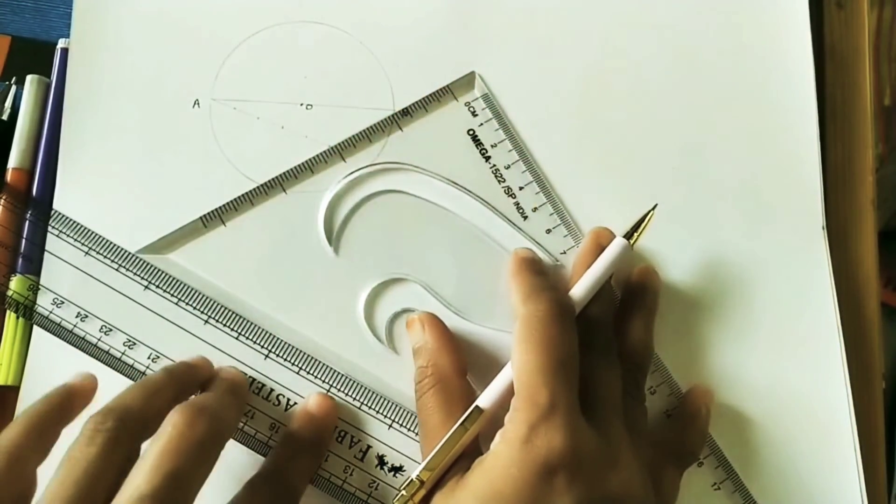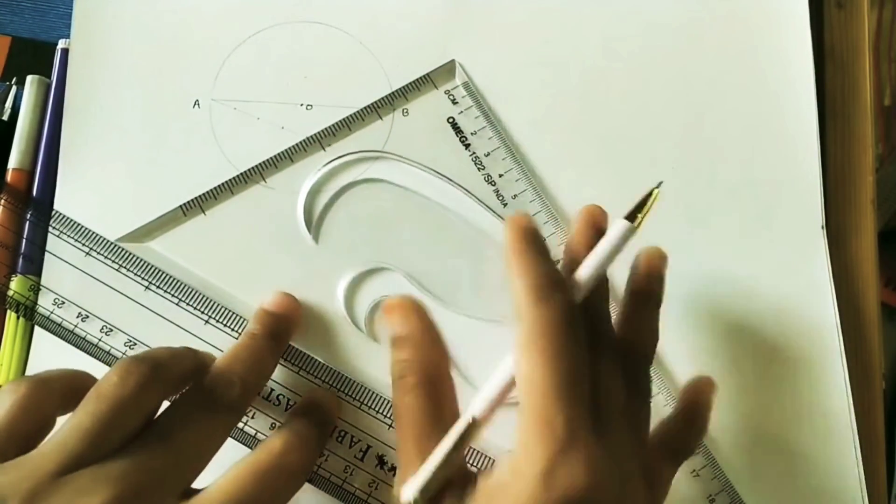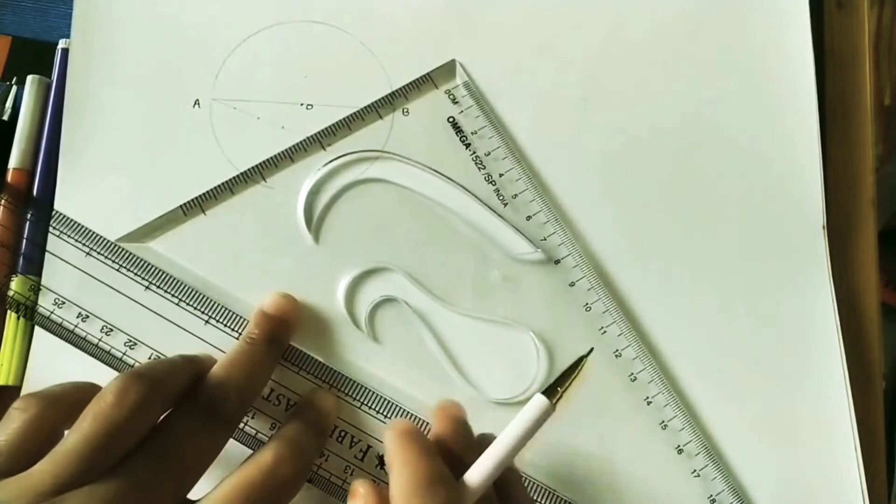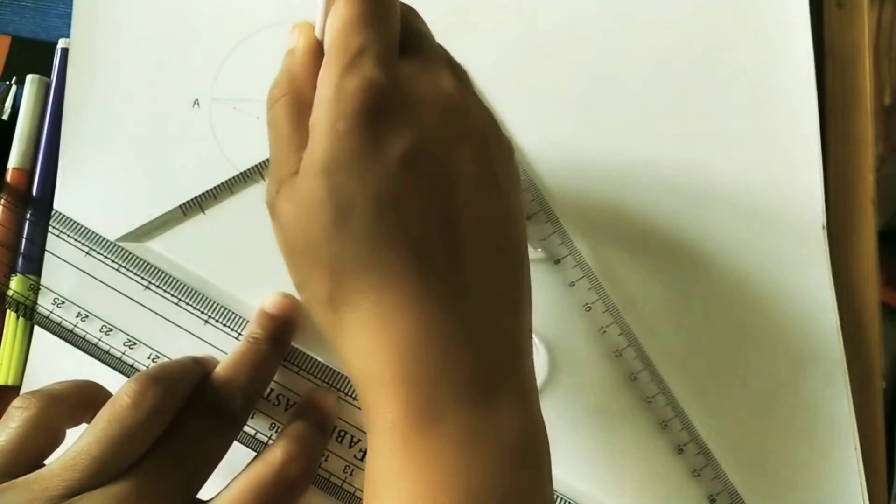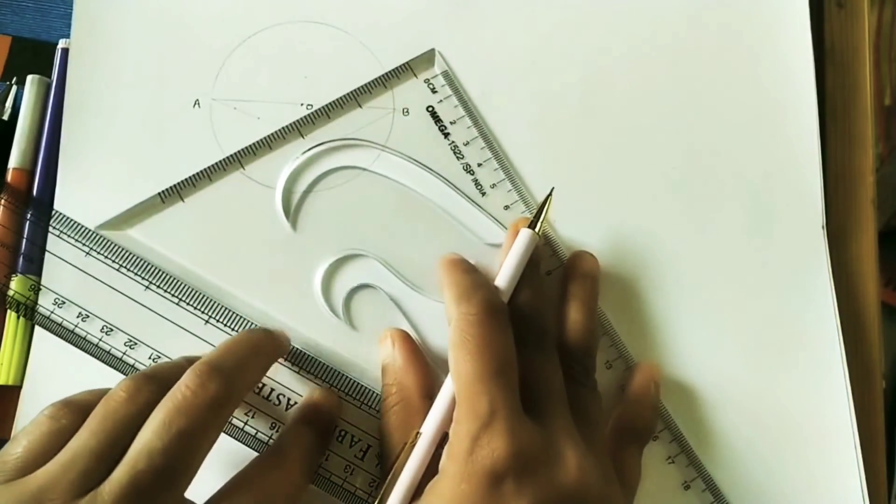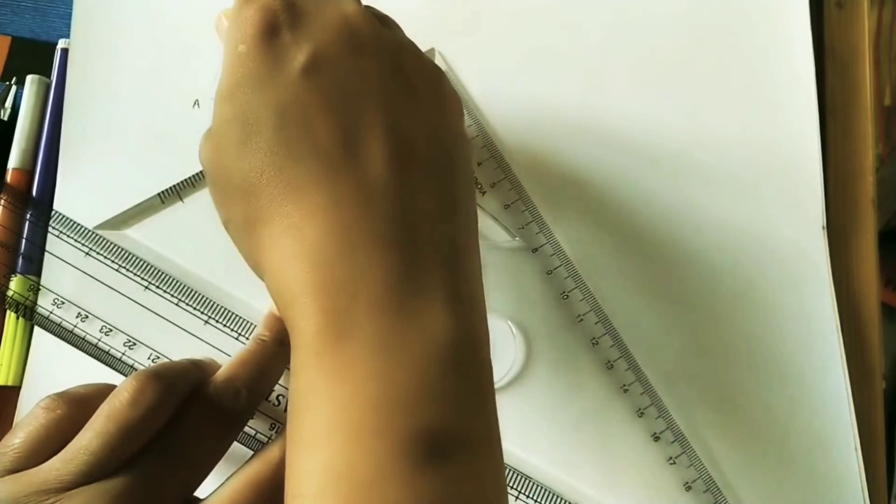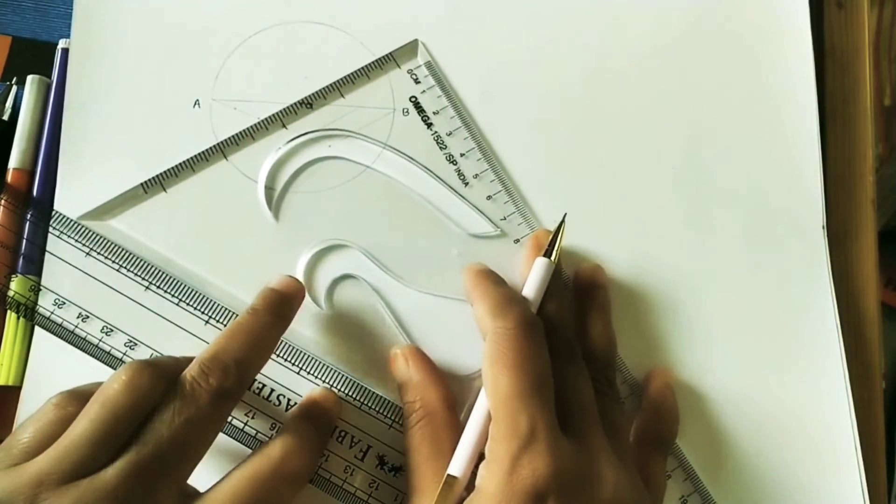For doing this parallel line, take the set square and keep the scale. Scale should not move. Just do the parallel lines at all the points. Move the set square in upward direction. At all the points, do the parallel lines.